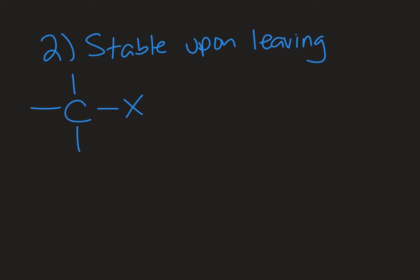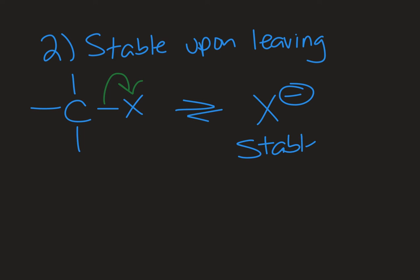The second factor to consider is how stable the leaving group is once it's left. X can leave because it's kicked off or it can leave by itself depending on the mechanism, but ultimately you're going to end up with X minus. The question is whether X minus is stable, because if it's not stable it's going to go in the reverse direction and your reaction won't proceed — you'll go back towards the reactants. One factor that contributes to stability is size: the larger an atom is, the more surface area it has to spread out a charge, and so the more stable it's going to be.